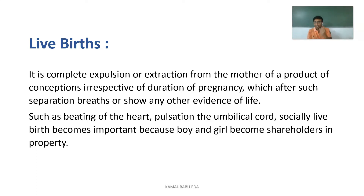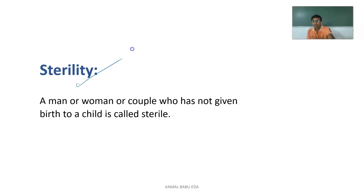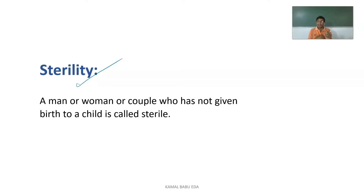Sterility refers to a man, woman, or couple who have not produced any birth. When a young adult couple successfully participates in sexual life for at least one year and is still unable to conceive a pregnancy, they are considered sterile — this condition is called sterility.